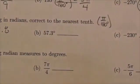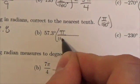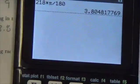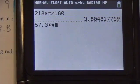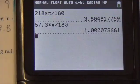We move on to the next one. 57.3 times π over 180, because I'm converting to radians. So we go to the calculator. 57.3 times π divided by 180. And I get 1.0.